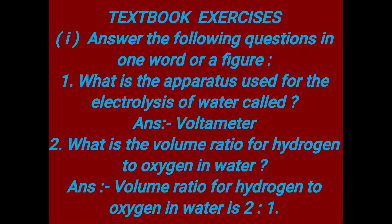The first question is: what is the apparatus used for electrolysis of water called? The second question is: what is the volume ratio for hydrogen to oxygen in water? The answer is the volume ratio for hydrogen to oxygen in water is 2 to 1 — you need two parts of hydrogen and one part of oxygen.